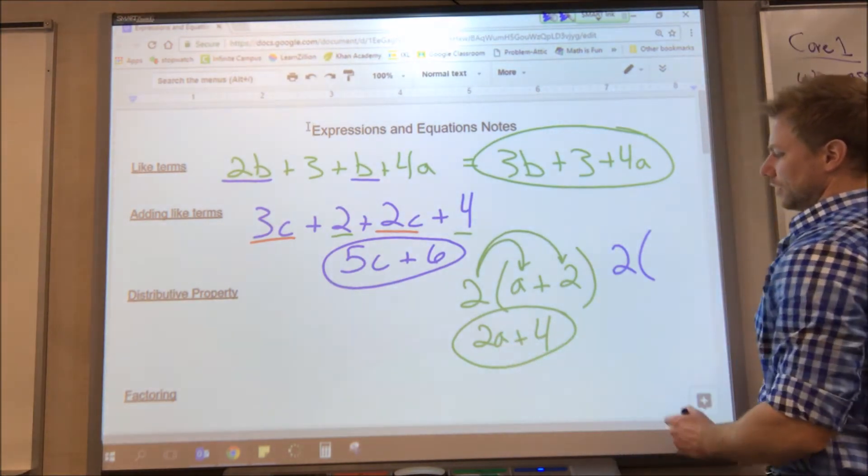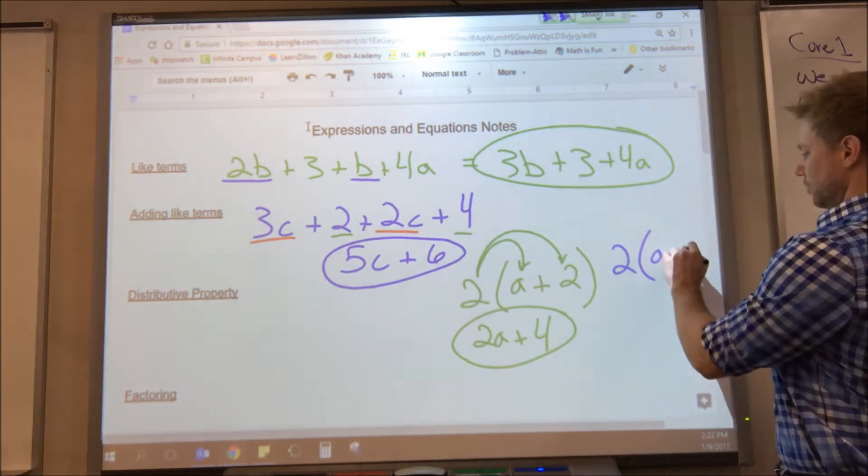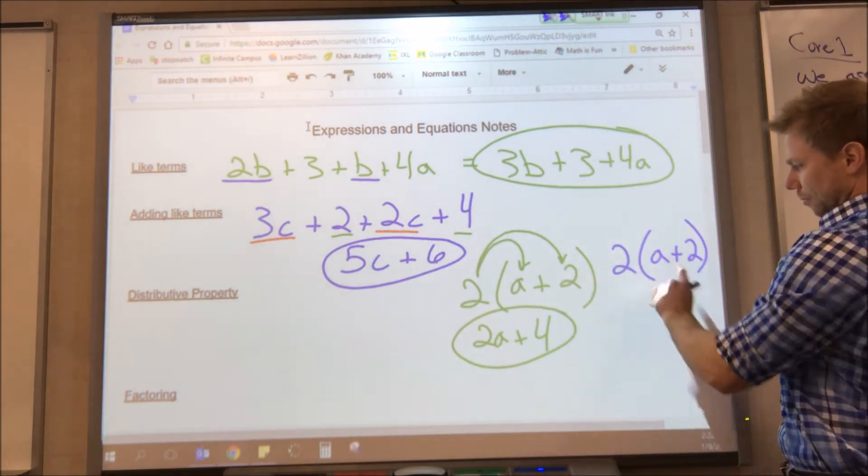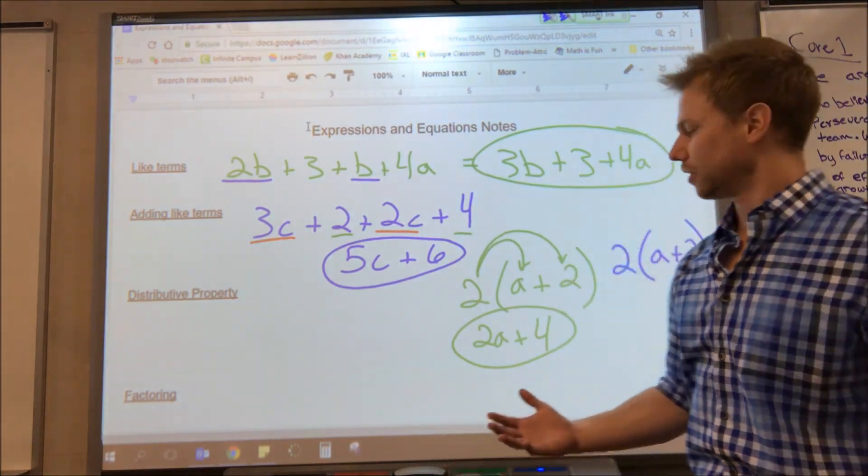So 2a divided by 2 is just a. 4 divided by 2 is 2. And I get back the original problem that I had. Just like multiplying and dividing are opposites of each other, distributing and factoring are opposites of each other.